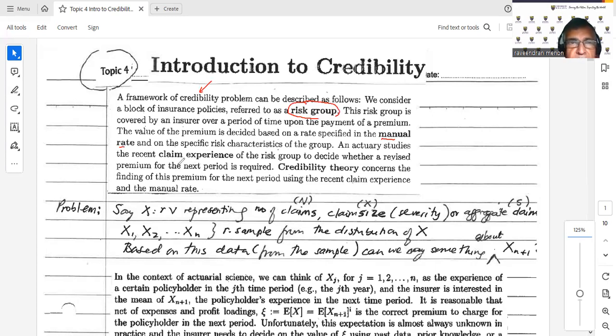So actually, an actuary studies the recent claim experience of the risk group to decide whether a revised premium for the next period is required. Basically what it means is, if you've been given a very good risk then maybe we give a discount, and if you've been a poor risk, maybe we need to up your premium.